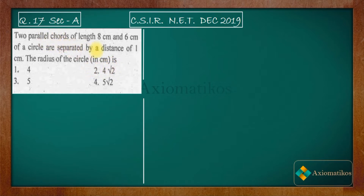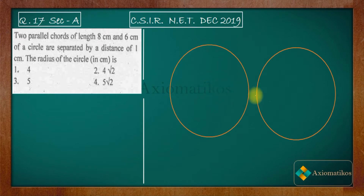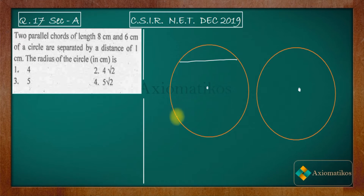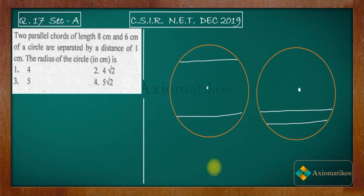We have a circle with two chords of 8 and 6 centimeter separated by a distance of 1 centimeter, and we have to find the radius. Let us first draw the figure. If we have a circle with a center, what are the possible configurations? One possibility is that one chord lies on one side and the other chord lies on the other side of the center. Another possibility is that both chords lie on the same side.